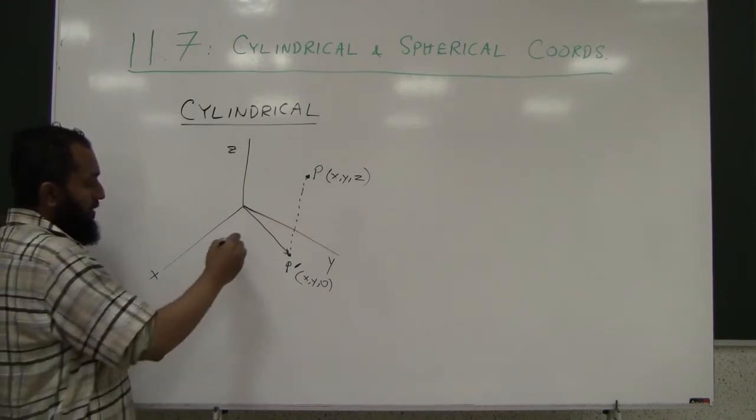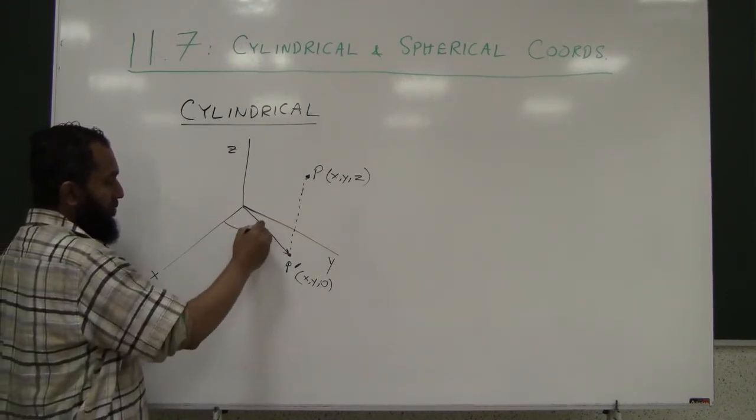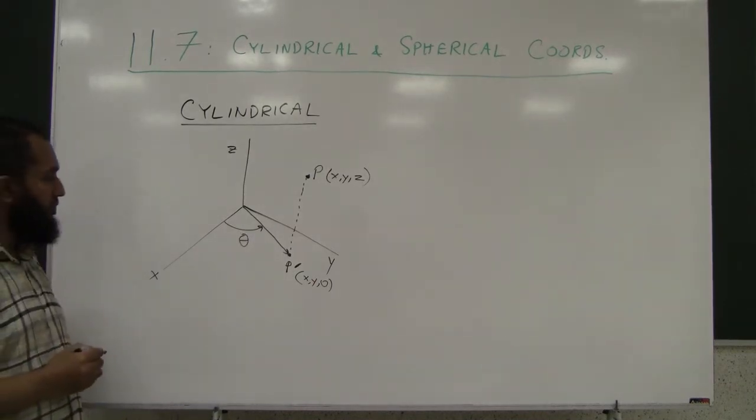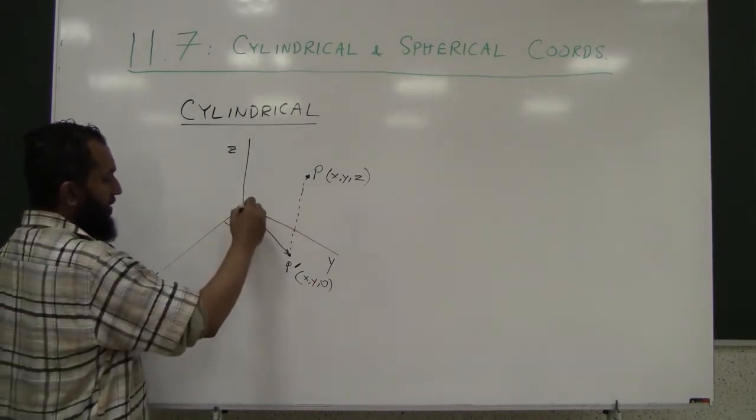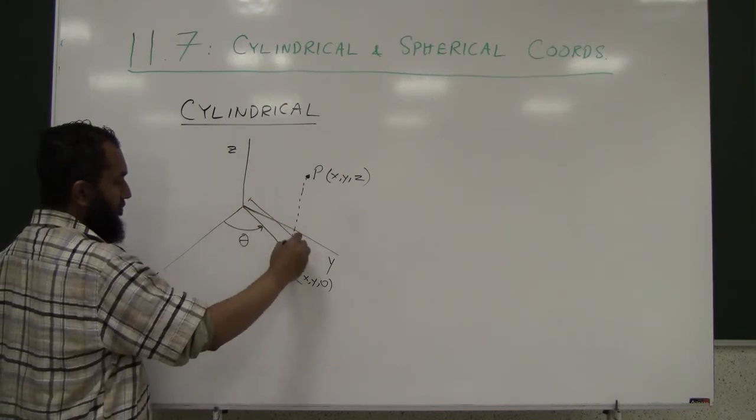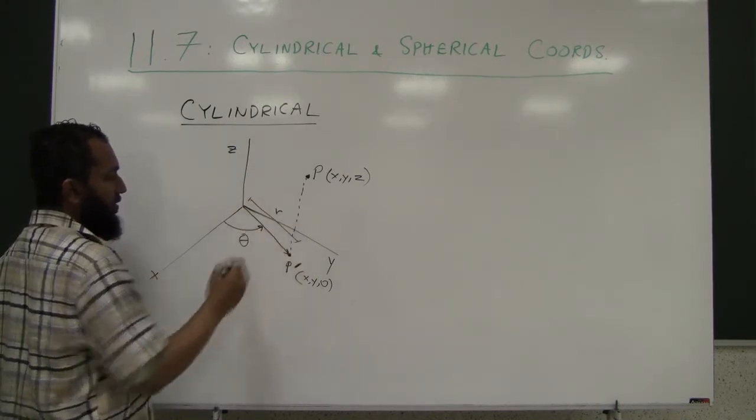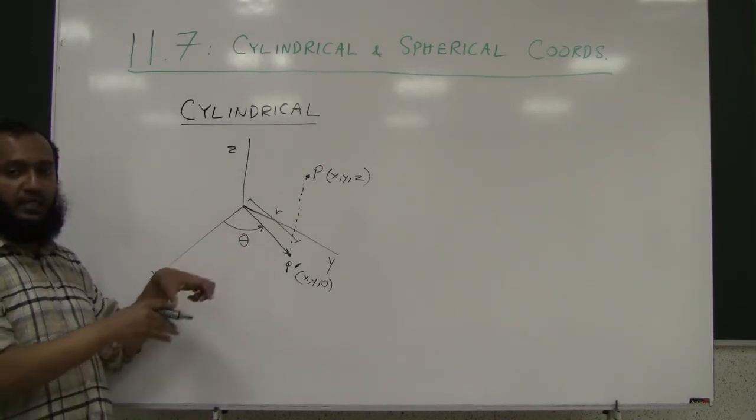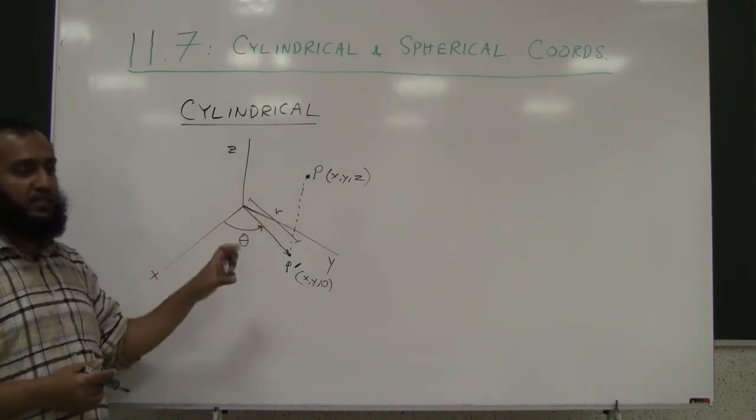And what you do is, you look at this angle, angle this ray makes with the positive X-axis. And you call that angle theta. And the length of this ray, you call it R. So this is just like the polar coordinate system, but embedded in the 3D world. And the Z coordinate, you keep it as Z.